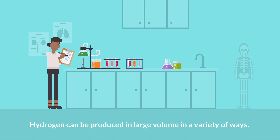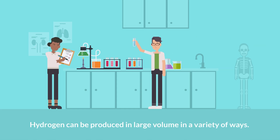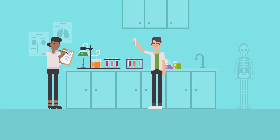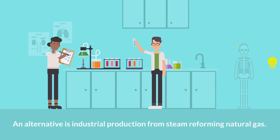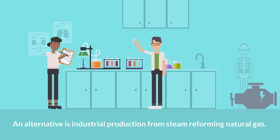Hydrogen can be produced in large volume in a variety of ways. Amongst those are electrolysis of water, which is an energy-intensive process. An alternative is industrial production from steam reforming natural gas.